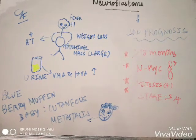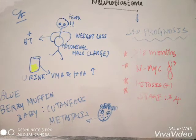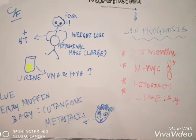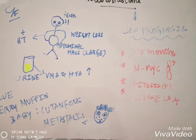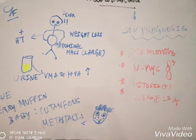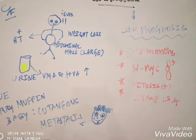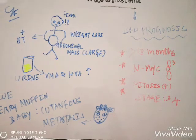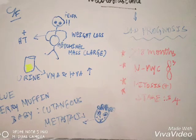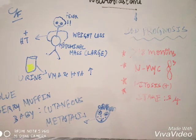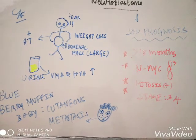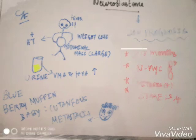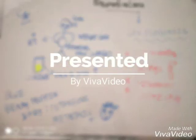The blueberry muffin baby is a term given for the cutaneous metastasis of neuroblastoma. Bad prognosis corresponds to age more than 18 months, N-MYC amplification, mitosis, and stage 3 or stage 4. It usually metastasizes by local infiltration, lymph node spread, and blood-borne spread to liver, lungs, bone marrow, etc.